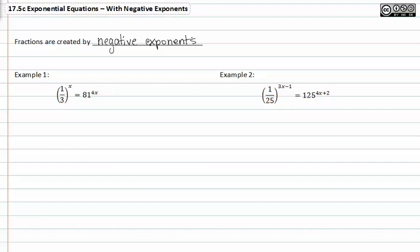Let's look at example one. We see that we have one-third raised to the x is equal to 81 to the 4x. If we wanted to rewrite this with the 3 not in the denominator, we could say that one-third is equivalent to 3 to the negative 1.